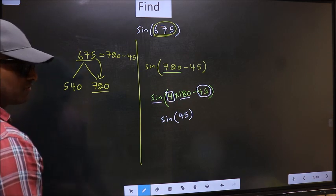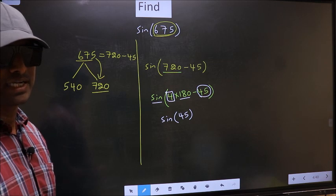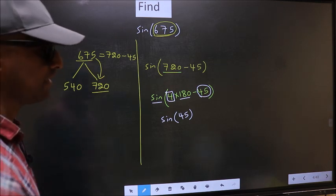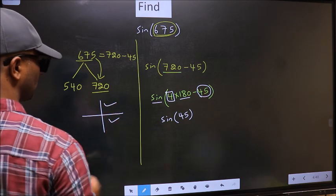And 4 is even. And all the even multiples of 180, they lie in either the first or in the fourth quadrant.